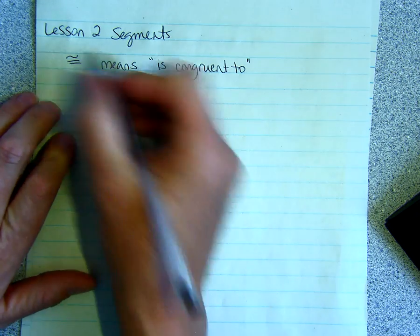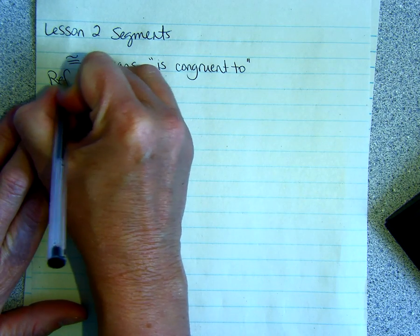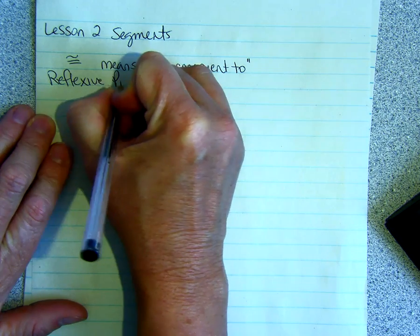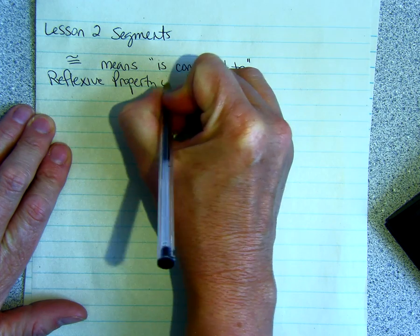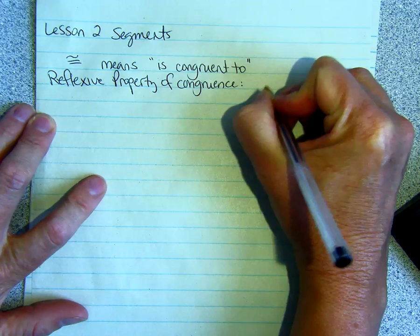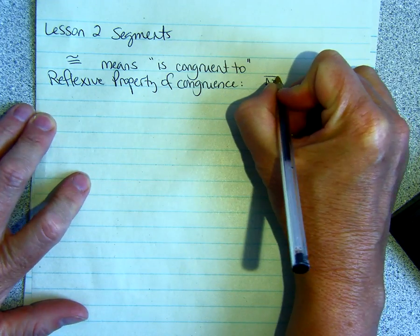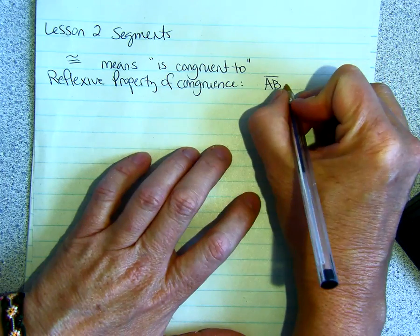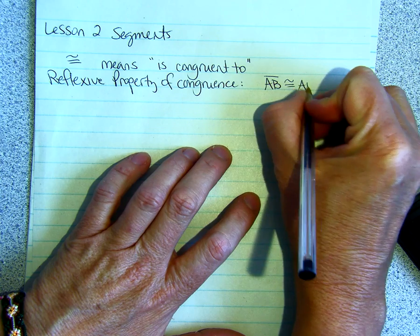The reflexive property of congruence is you could have a segment is congruent to itself.